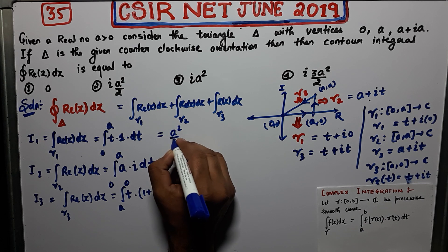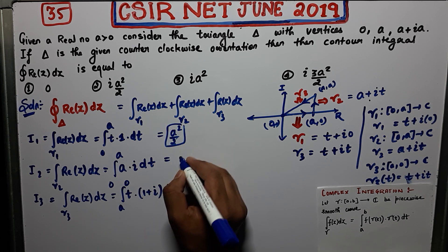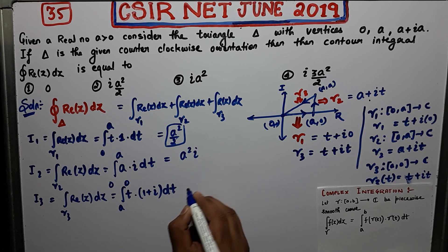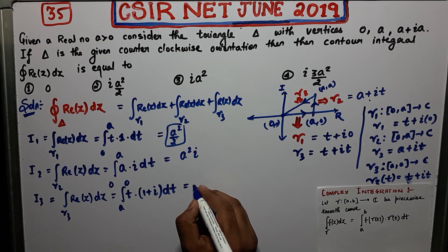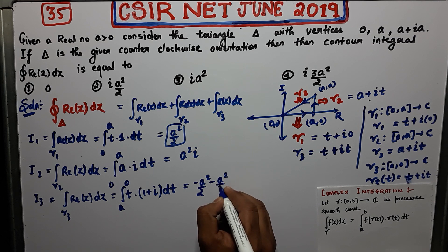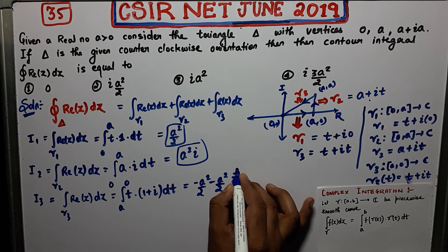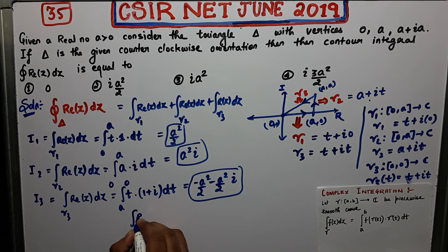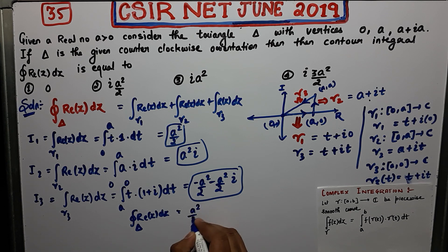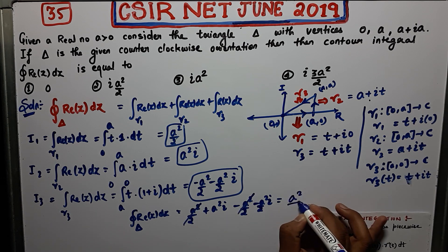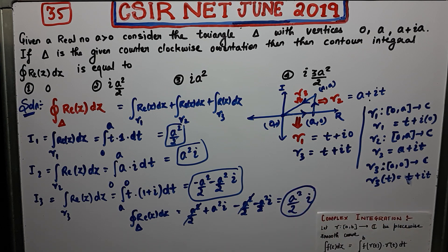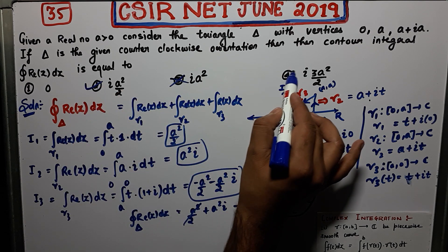After solving: I1 = a²/2, I2 = a²·i, and for I3, evaluating from a to 0 gives −(a²/2)(1 + i) = −a²/2 − (a²/2)i. Now adding them up: a²/2 + a²·i + (−a²/2 − (a²/2)i). The real parts cancel: a²/2 − a²/2 = 0. The imaginary parts: a²i − (a²/2)i = (a²/2)i. So the result is ia²/2.